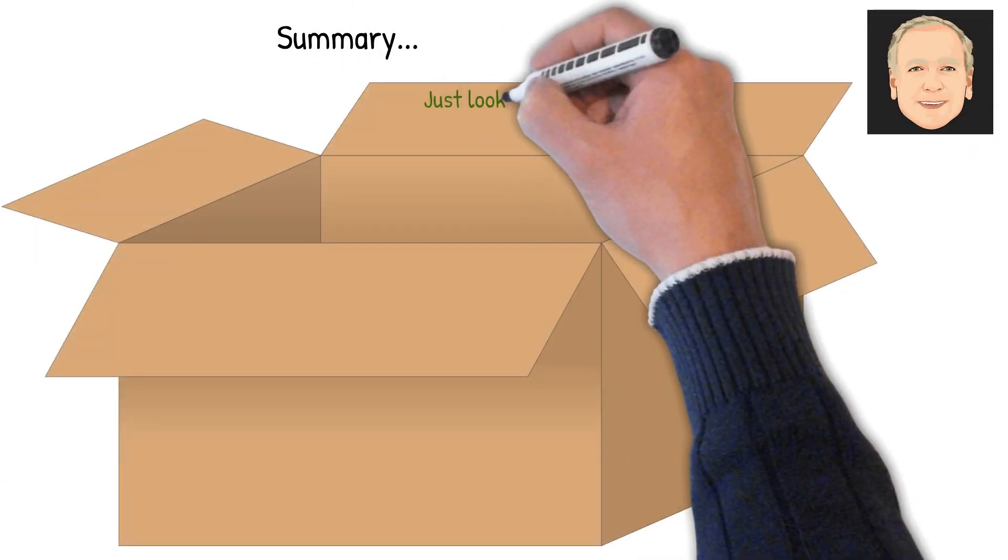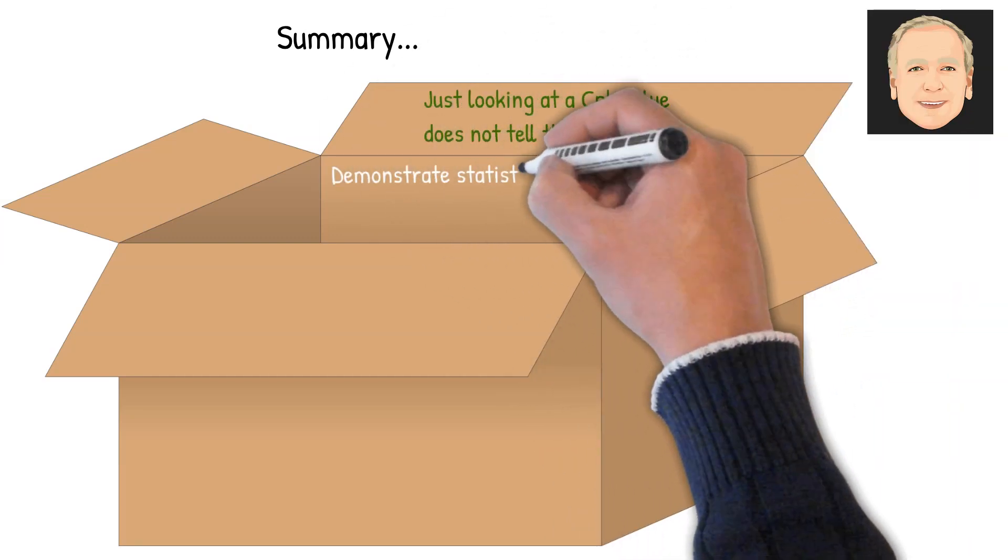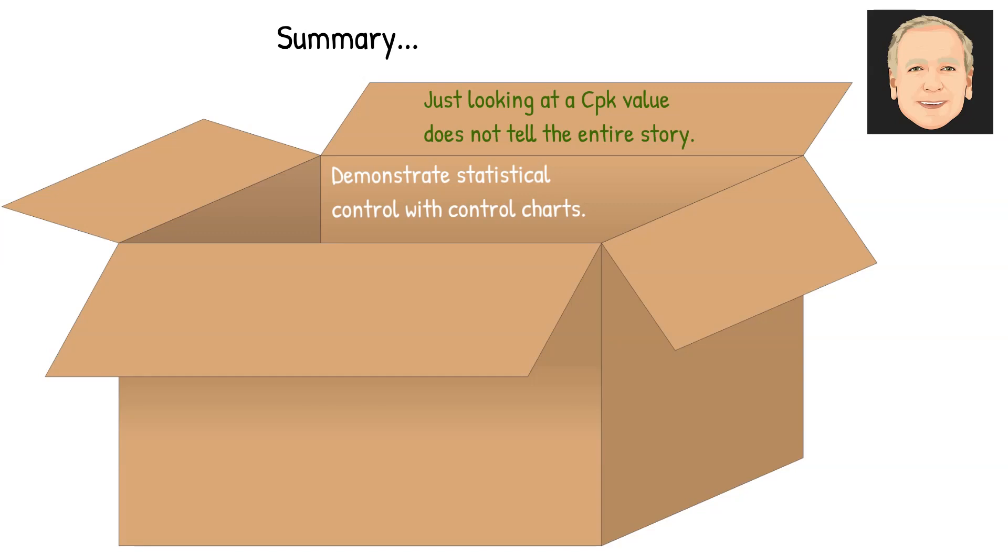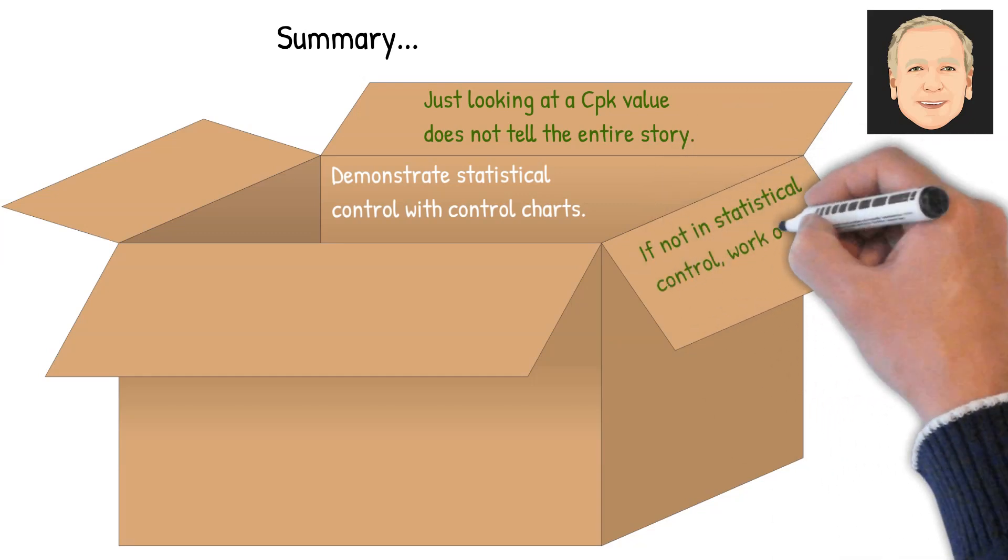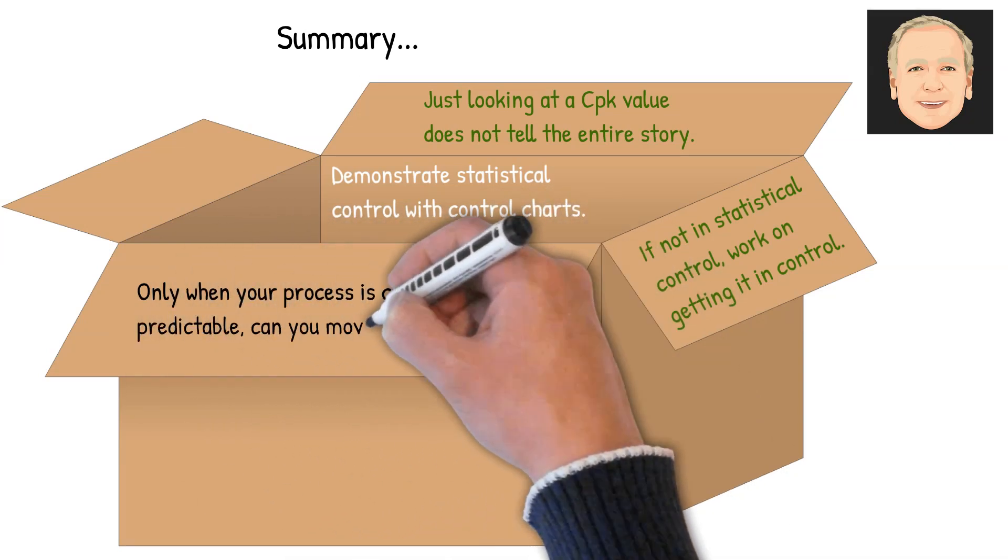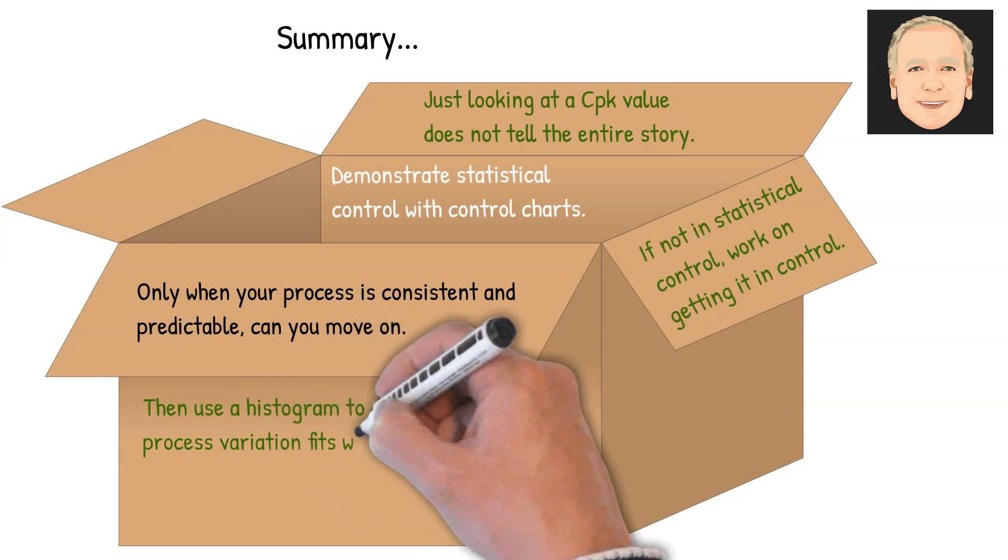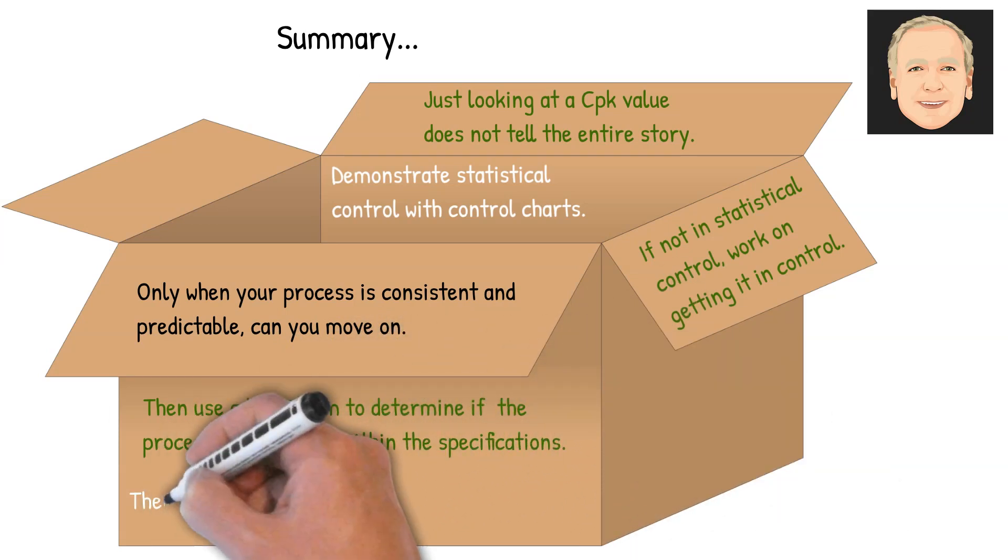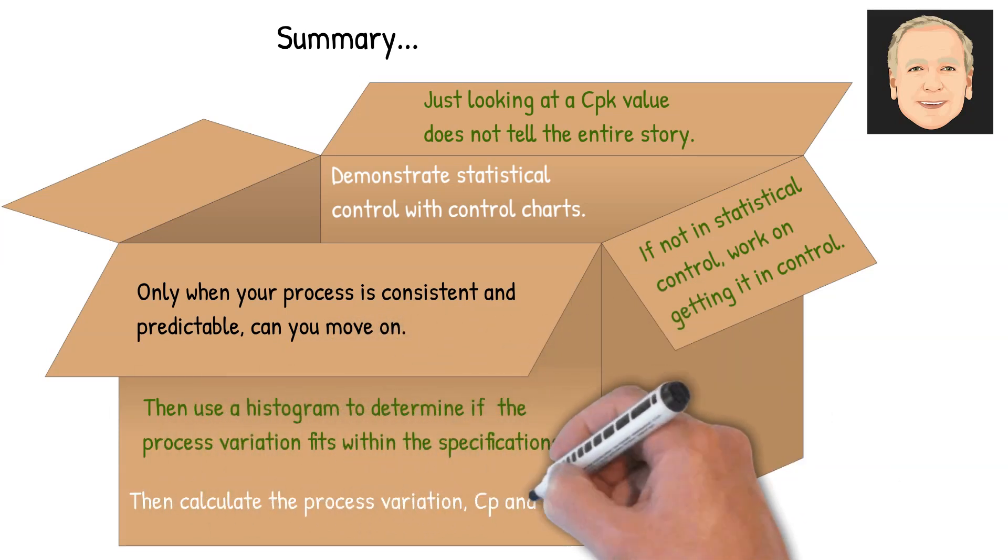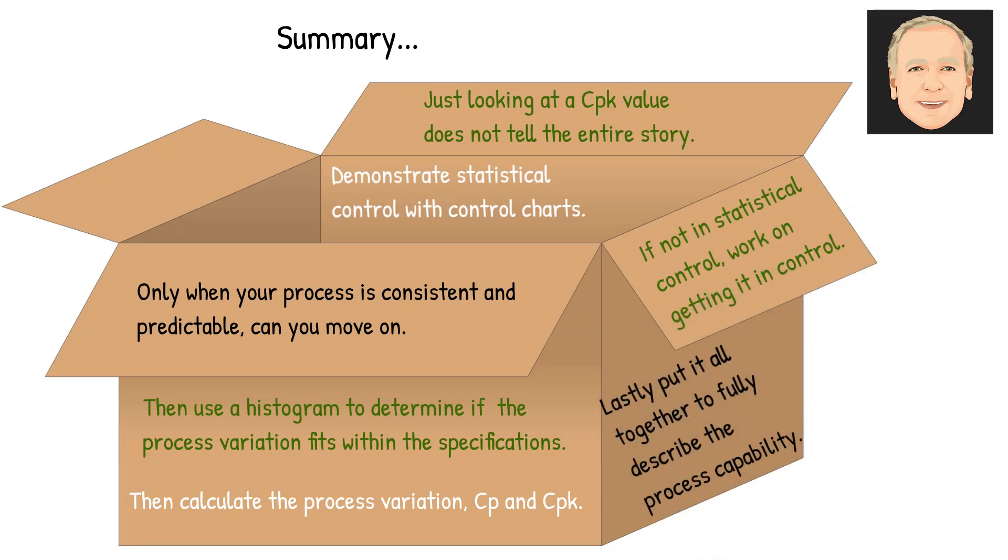So summary, what have we done? Looking at a CPK value by itself does not tell the entire story. We have to demonstrate statistical control with control charts. If it's not in control, get it into control. Only when your process is consistent and predictable can you move on. Then you use a histogram to determine if the process variation fits the specifications. Then you calculate the process variation, CP and CPK. And you put it all together to fully describe the process capability of your process.